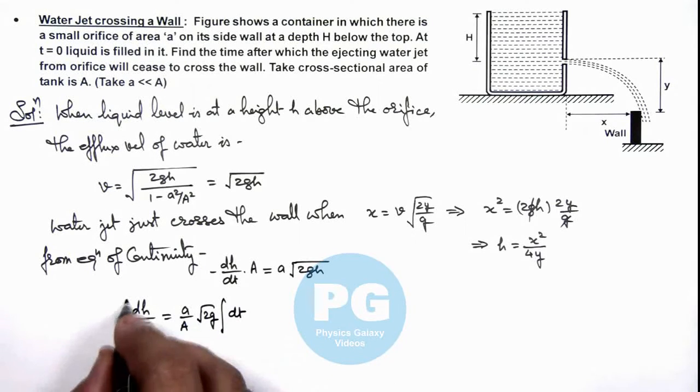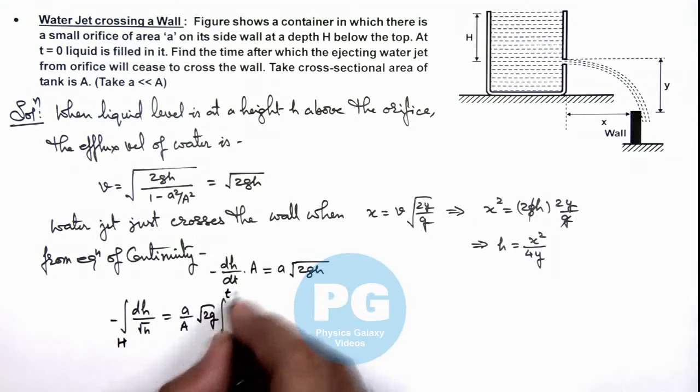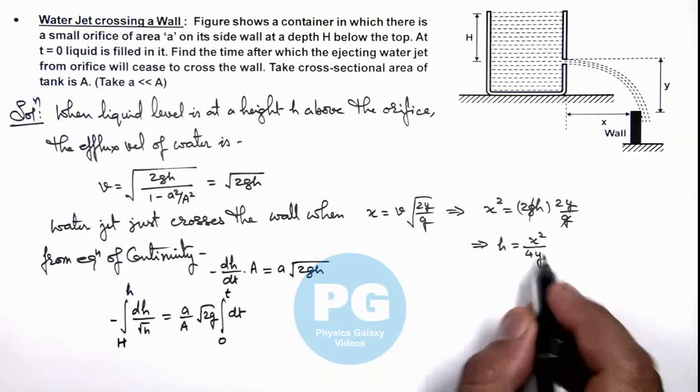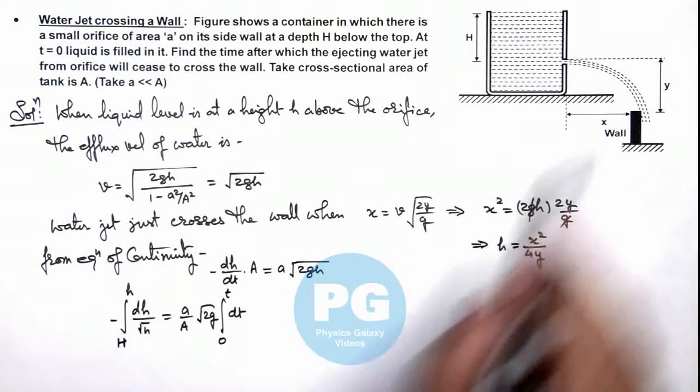And we can integrate these terms: at t=0 the height was given as H, and at time t this reaches to small h which is given by x²/4y when water will just be crossing the wall.